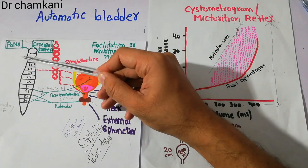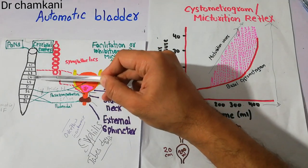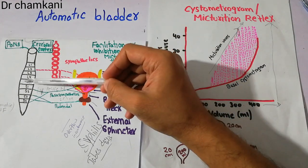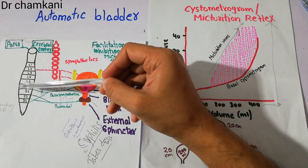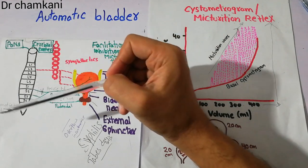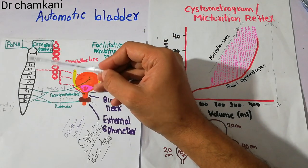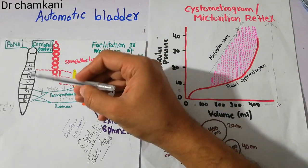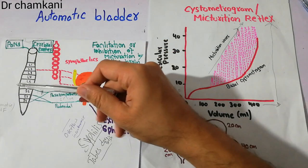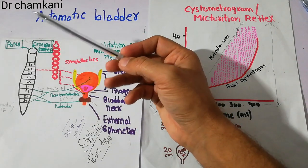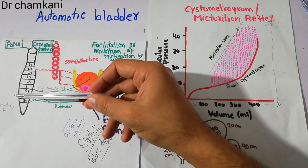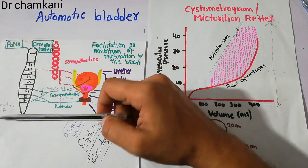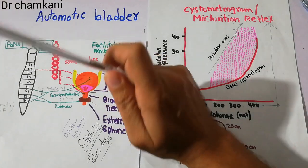If the spinal cord is damaged above the sacral segment, the connection of the sacral segment with the pons and cerebral cortex is lost. The facilitative and inhibitory signals coming down to the spinal cord from the brain are now cut — they are no longer reaching the sacral segment. So this sacral segment becomes automatic, basically starting and stopping the micturition reflex on its own without the help of the brain.